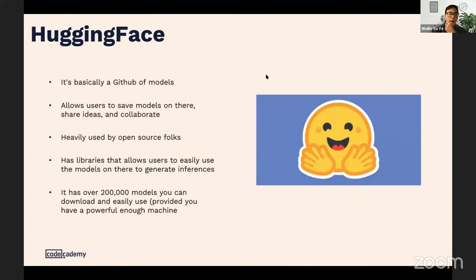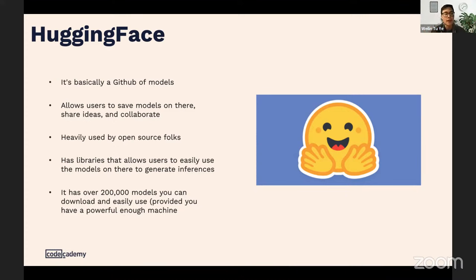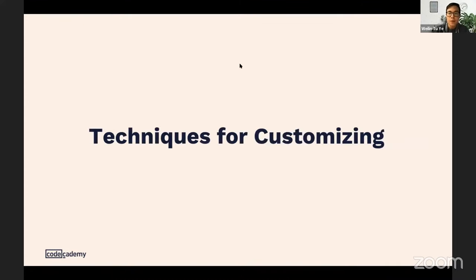Another tool worth checking out is Hugging Face — basically a GitHub for models. It allows users to save models, share ideas, and collaborate. It's heavily used by the open-source community. If you have a model you want to try, Hugging Face is a great place to download it and experiment. They have tons of models to play around with.